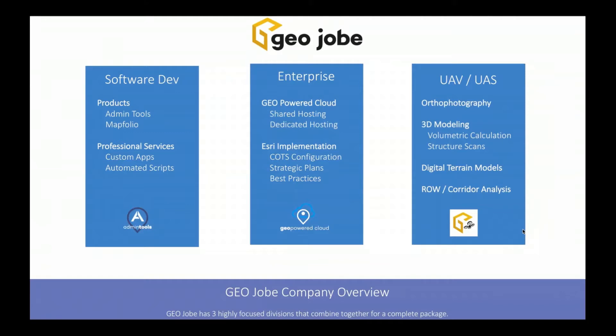Our third vertical is UAV/UAS. We do ortho photography, 3D modeling including volumetric calculations and structure scans, digital terrain model collection, and right-of-way and corridor analysis. Neil Jobe is on the call today if you have any questions about that. If you have UAV needs, please reach out — we have lots of information on our website.